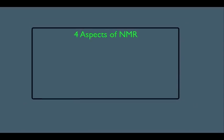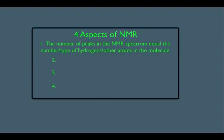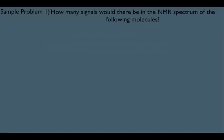In this online lecture, we're going to discuss one of the four important aspects of HNMR. That aspect is number one: the number of peaks in the NMR spectrum equals the number or type of hydrogens or other atoms in the molecule. We not only have to know this truth for organic chemistry, but we have to know how to apply this principle. This is a definitely must-have skill.